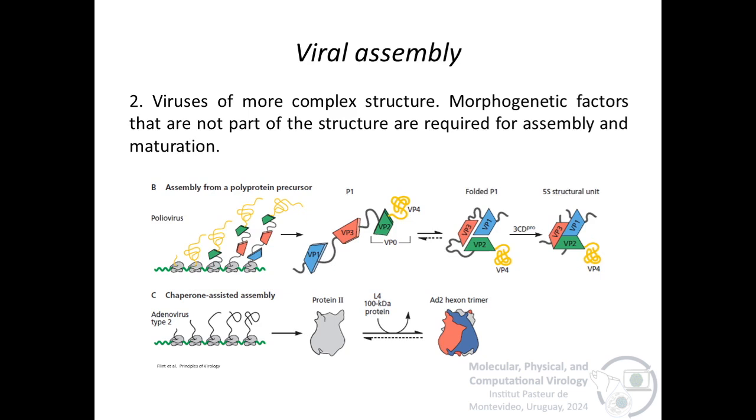On the other hand, viruses with a more complex structure require morphogenetic factors that are not part of the structure for assembly and maturation. In the case of poliovirus, successive cleavage of the precursor P1 causes structural changes in the products that lead to their aggregation. And then after assembly, the proteins are modified by the viral protease 3CD to form the 5S structural units. In the assisted assembly, some structural units are assembled with the help of viral chaperones, such as the adenoviral L4 protein of 100 kilodaltons, which is required for the formation of the hexon trimer from the protein 2 monomer.